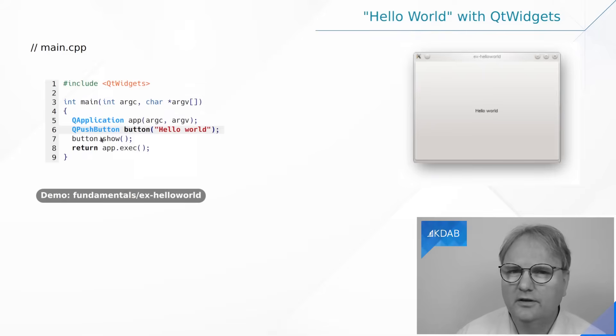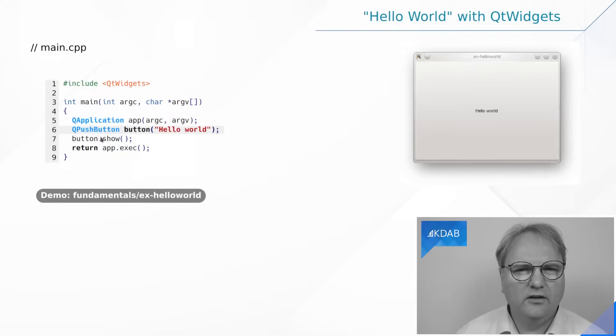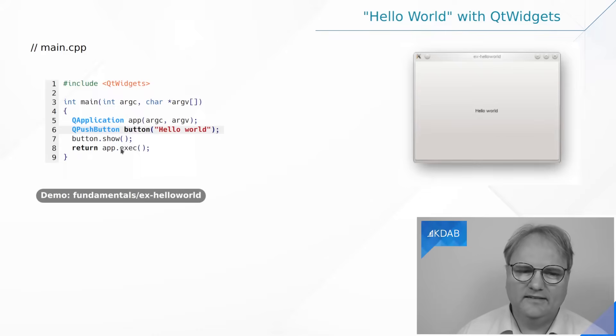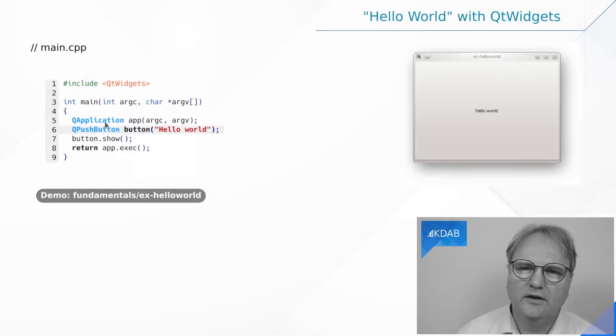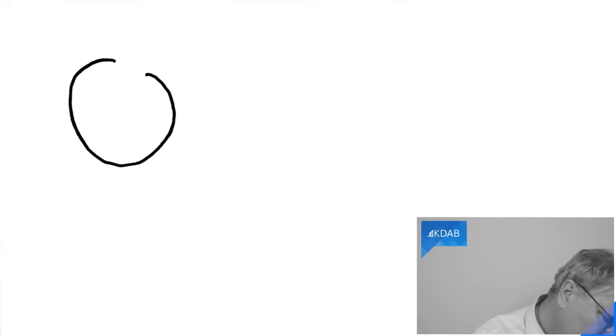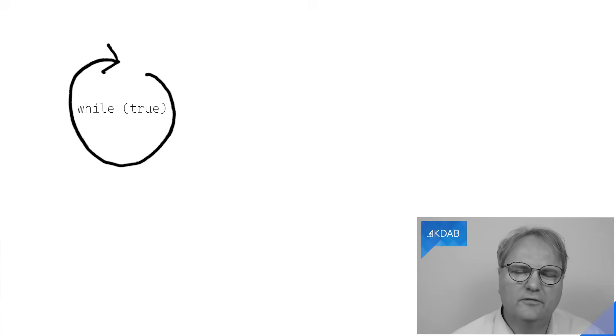I show this button — if I didn't, it would be created behind the scenes, ready to be shown, but not shown yet. And finally, I call exec on the QApplication instance, and that will start the event loop. So let me show you what an event loop really is — conceptually, at least. You can think of it as a while true loop that runs forever. And of course, if it was a while true loop, your computer would be really hot whenever it was running.